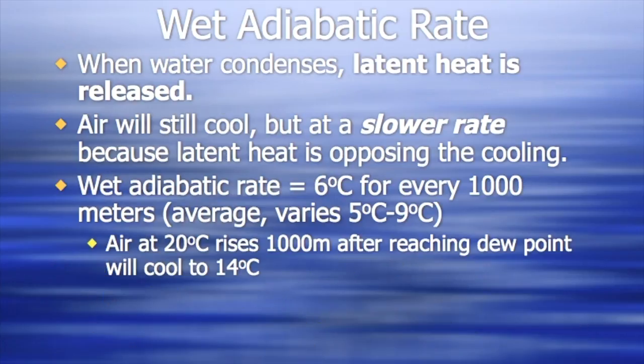But when that water condenses and that latent heat is released, what happens is that warms the air just a smidge. The air is still going to cool but it's not going to cool quite as fast. And so the wet adiabatic rate is approximately six degrees Celsius for every thousand meters. That's an average, it actually varies from anywhere from five to nine degrees Celsius. We'll usually use five because it's just a friendlier number, and again you don't have to memorize that.